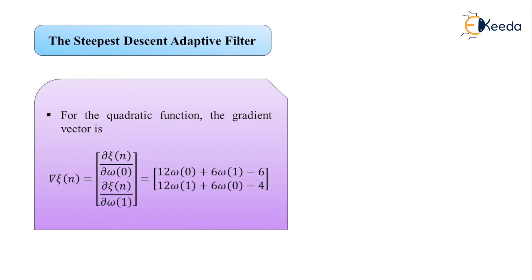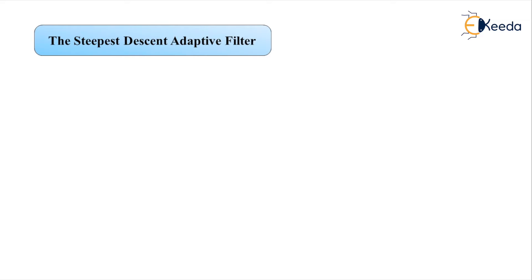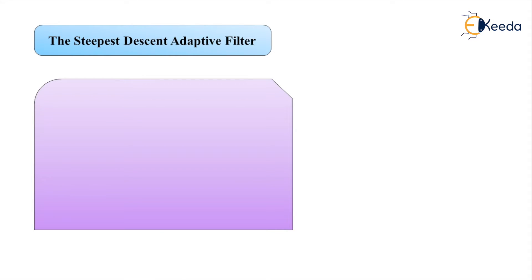The first element is ∂ζ(n)/∂w(0) = 12·w(0) + 6·w(1) − 6, and the second element is ∂ζ(n)/∂w(1) = 12·w(1) + 6·w(0) − 4. For any vector w, the gradient is orthogonal to the line tangent to the elliptical contour of constant error at w, as shown in the illustration. Since the gradient vector points in the direction of the steepest ascent, the direction of steepest descent points in the negative gradient direction.